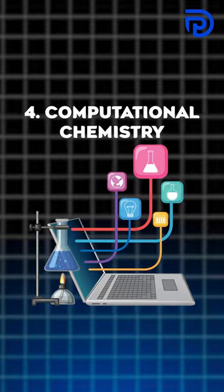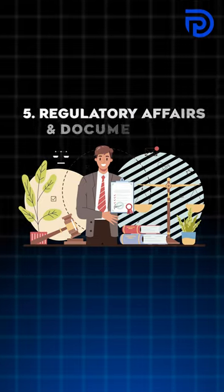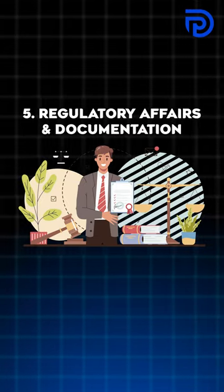The fourth skill is Computational Chemistry, in which you can design and develop drugs. The fifth skill is Regulatory Affairs and Documentation, where you maintain and regulate document submissions, which is essential for compliance during the launch of a new product.